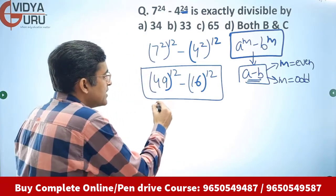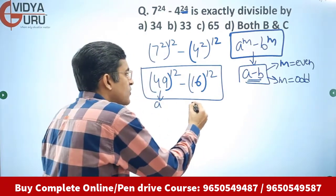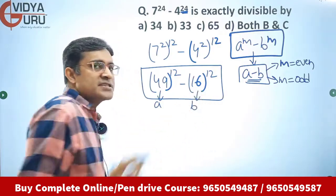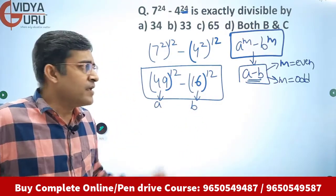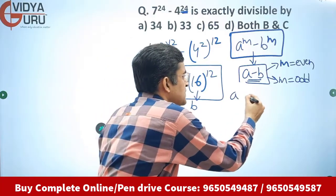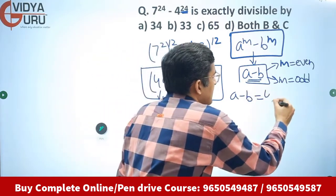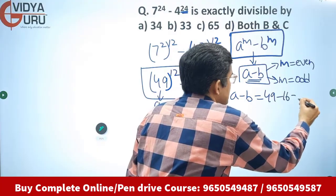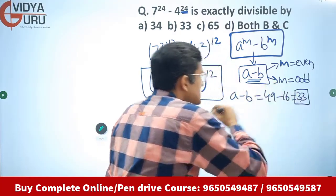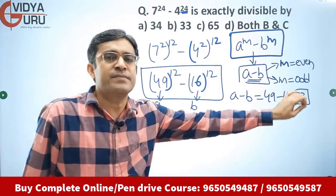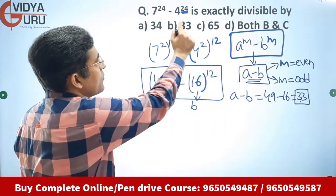Here a is 49 and b is 16. So this expression will be divisible by a minus b. A minus b becomes 49 minus 16, which equals 33. This particular expression is divisible by 33.